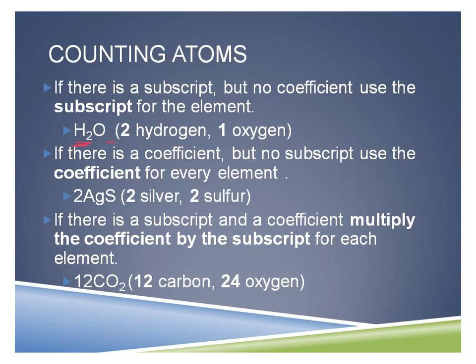Now if there is a coefficient and no subscript at all, you're going to use the coefficient for every element. In this case, when I have silver sulfide, I don't have any subscripts, so all I'm going to do is carry the 2 over to the silver and to the sulfur and apply it to both. And if I have both a subscript and a coefficient, this is basically distributing that coefficient to everything behind it — I'm going to multiply the coefficient by the subscript for each element. Remember, if there's no subscript, that just means there's one — you're not going to multiply by zero.